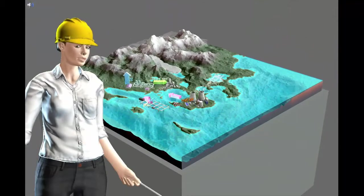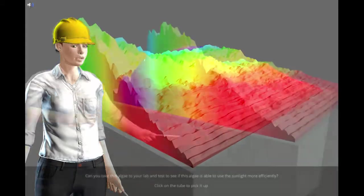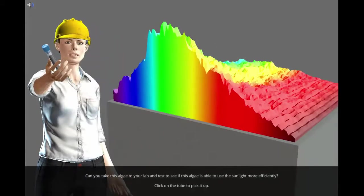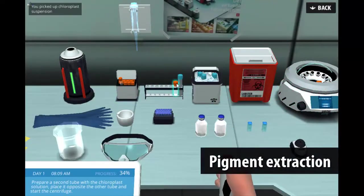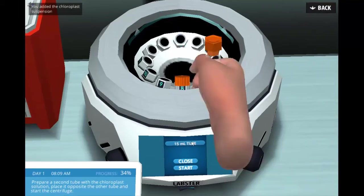There is an algal strain that has the potential to use the whole spectrum of sunlight for photosynthesis. Students have to extract the pigments of the algal strain and identify the pigments.